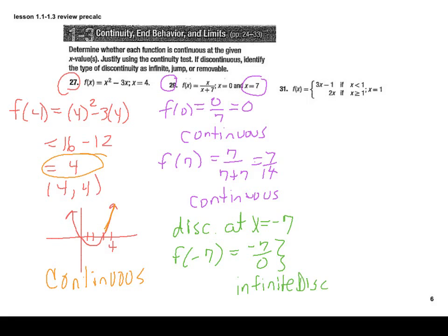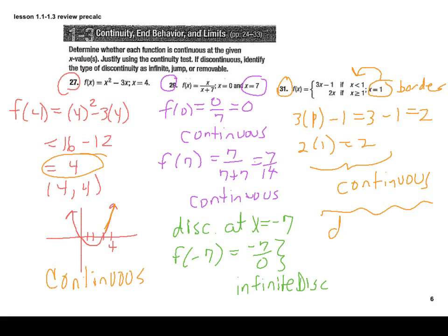Now let's take a look at problem 31. They want us to check one. This is a piecewise function, and you'll notice that's our border value. If it is on the border value, you just have to make sure that it works, and it connects to the same value in both the top and in the bottom. Well, if we plug 1 into the top, you get 2. If you plug 1 into the bottom, you also get 2. So because of that, it's continuous. Remember, if they didn't match, then it's a jump. Since these ones did match, it's continuous.